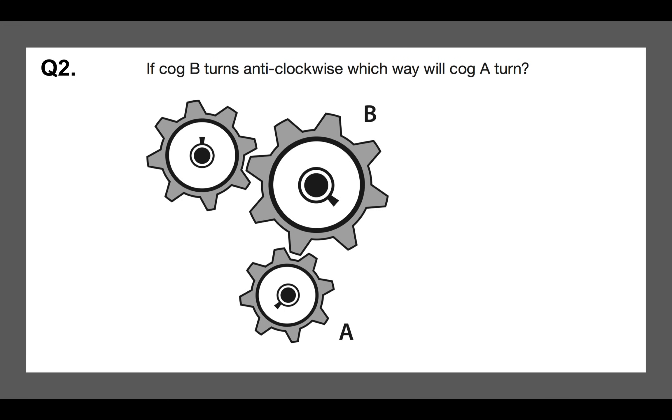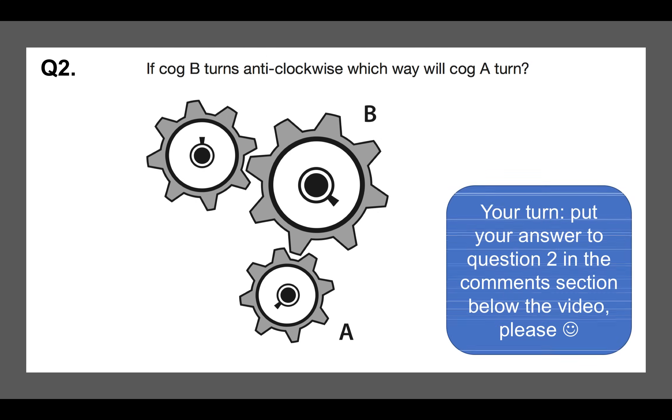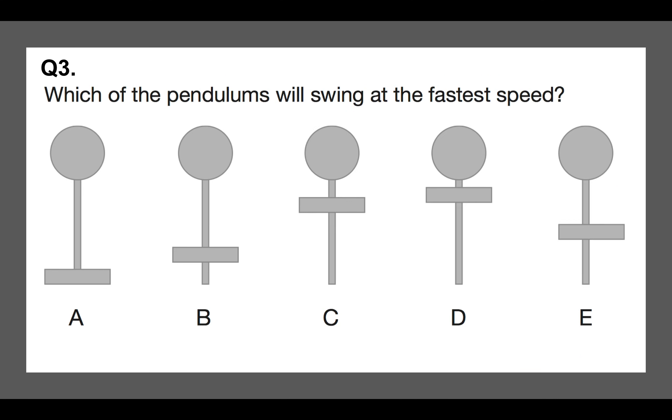So question number two. You guys, I want you to have a go at this and answer this yourself. If cog B, the large one to the right, turns anti-clockwise, which way will cog A turn? So put your answer to question two in the comments section below the video, please. As we go through these questions, if you need to pause the video to take a bit of time to answer them, please feel free to do so. But don't forget to put your answers in the comments section below the video. So if cog B turns anti-clockwise, which way will cog A turn? Please put your answer below.